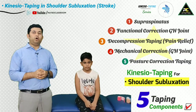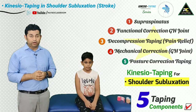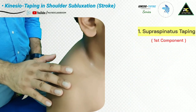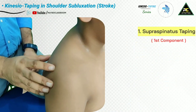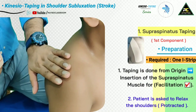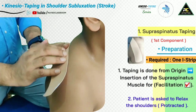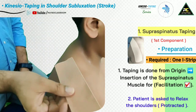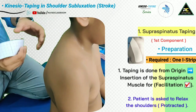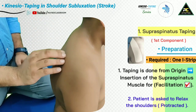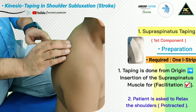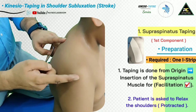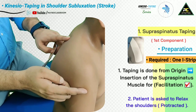Let's get started with the practical demonstration of the kinesio taping technique for hemiplegic shoulder pain and subluxation. In this example, we are going to tape the right side shoulder joint. The first taping is for activation or support of the supraspinatus muscle. For this, I have prepared an I-strip that is going to be applied over the spine of the scapula where the supraspinatus originates, with the strip placed distal to the glenohumeral joint by at least one to two inches.